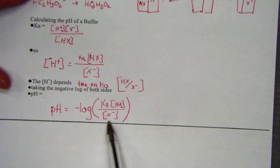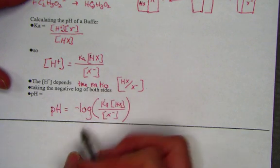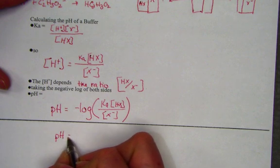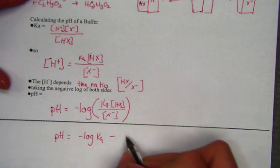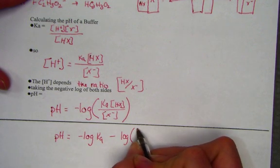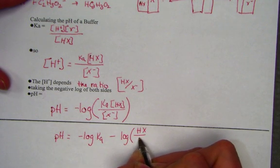Negative log of the right-hand side needs to be simplified, and we'll do so by writing, pH is now found by negative log of the Ka minus the log of the ratio of the acid over base.